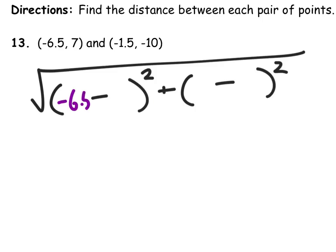We've got negative 6.5 minus the other x, negative 1.5. And then I've got the y's in the same positions from the corresponding parts. So let's go ahead and add and subtract these.